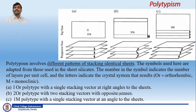In the third type, which is 1M polytype, there is a single stacking vector at an angle to the sheet. This may be called 1M polytype, which is of monoclinic system.